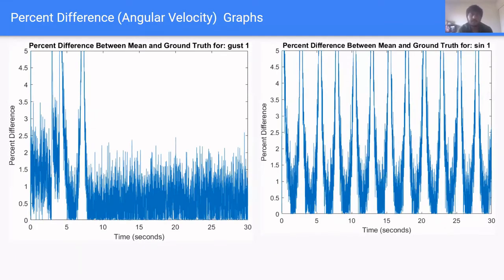Here are the graphs showing percent difference between ground truth angular velocity and the mean of the filtered angular velocities. Sometimes these graphs spike up to infinity, but this happens when the ground truth approaches zero. Normally, we can see that the percent difference is between zero and two percent, which makes sense because our IMU outputs two percent noise. Here, these graphs show the percent difference for the first gust disturbance and the first sine disturbance.